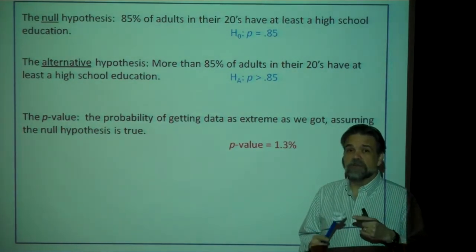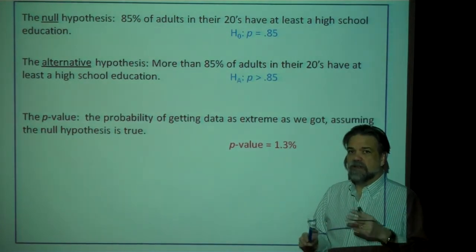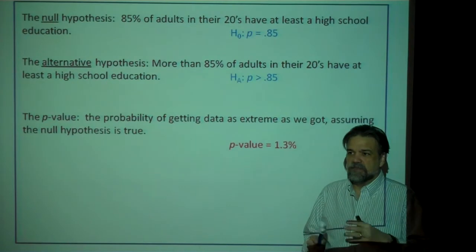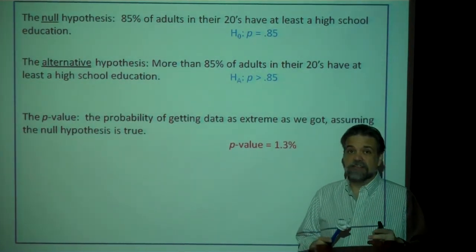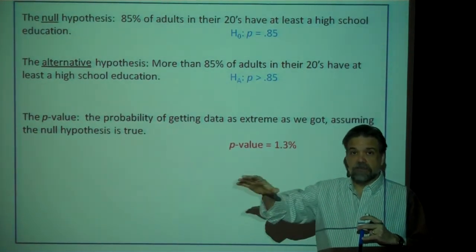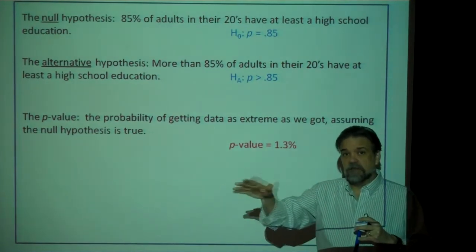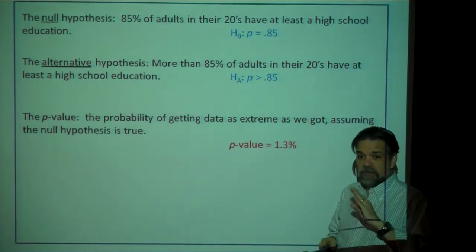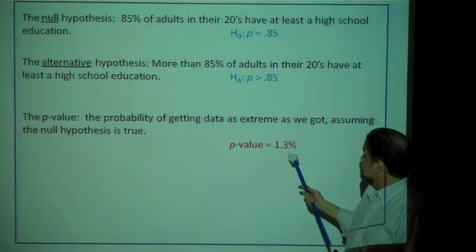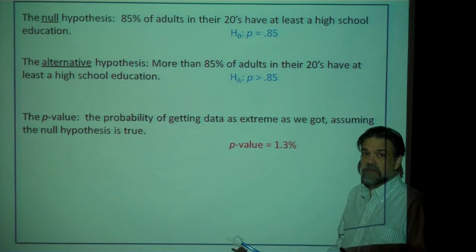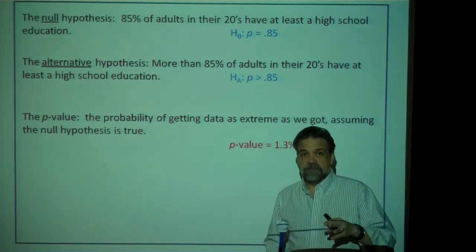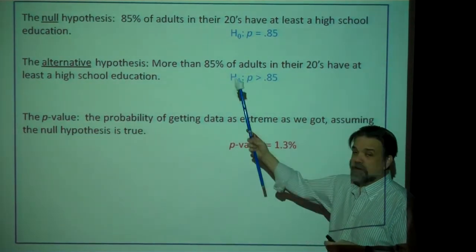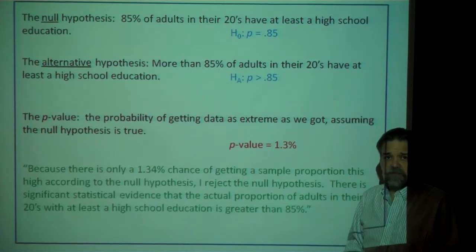The P-value is the probability of getting data as extreme as we got, assuming the null hypothesis is true. A lot of people misinterpret the P-value and say it's the probability that the null hypothesis is true — but the null hypothesis is not a random variable. The random variable is P-hat, because it depends on the particular sample we're choosing and varies from sample to sample. So the probability of getting a P-hat as extreme as we got was only 1.3%. The P-value is a conditional probability — the probability of getting something this extreme given that our null hypothesis is true.